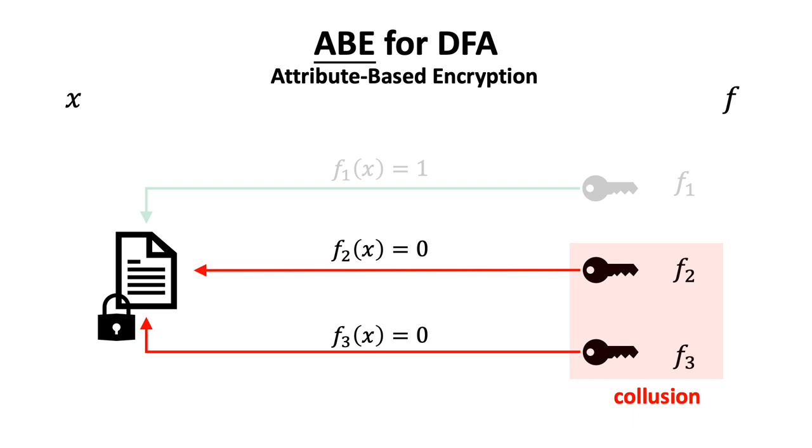This should hold even when more than one key holder collude with each other and probably combine their keys in some way. This is the standard security notion of ABE.